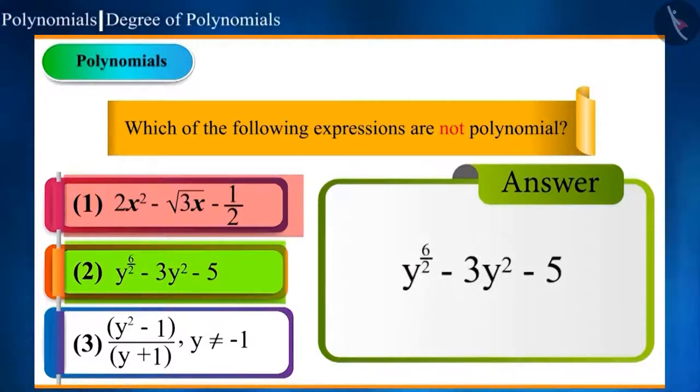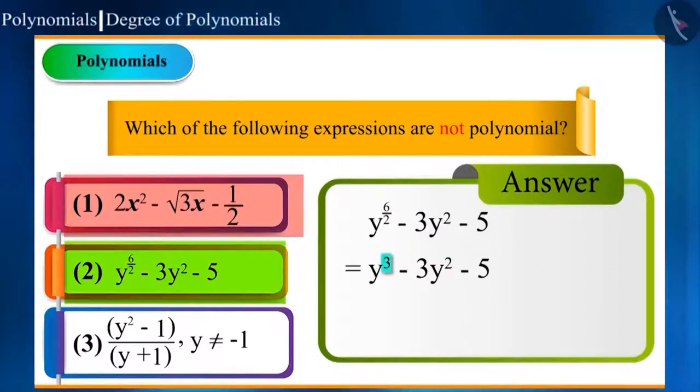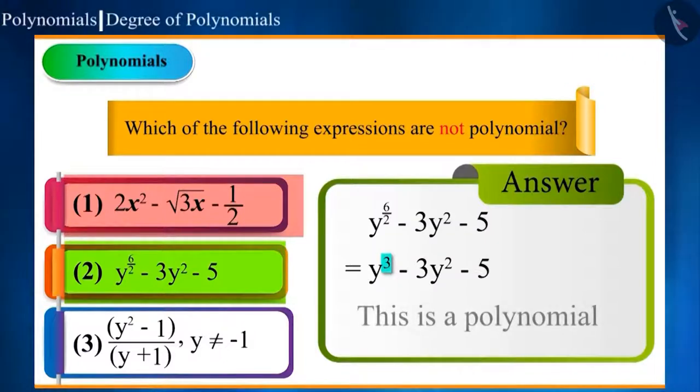The second option is y to the power of 6 by 2 minus 3y square minus 5. Here, in the first term, the power is 6 by 2. It is a fraction, but on solving it becomes 3, which is a whole number. Powers of the rest of the terms are also whole numbers. Hence, this is also a polynomial.